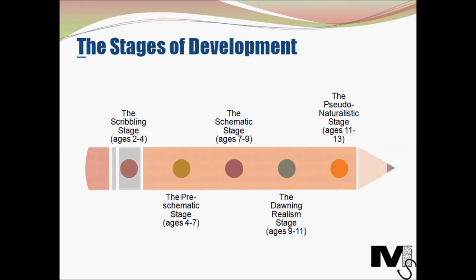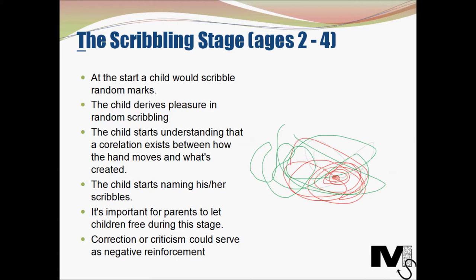The scribbling stage takes place between the ages of 2 to 4. At the start of this stage, a child scribbles random marks. This becomes the child's way of self-expression, sort of like an alternative to crying. The child derives pleasure in random scribbling and exploring artistic materials, despite not having much understanding of what is actually being created. After about six months, the child starts understanding the correlation between how the hand moves and what is created, and the marks start becoming slightly more orderly.